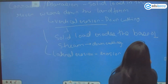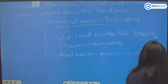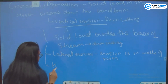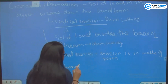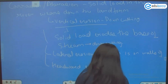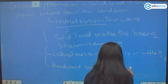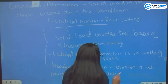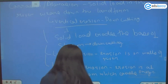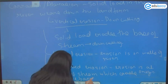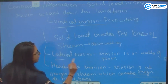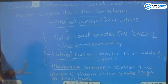Then we have headward erosion. In headward erosion, the erosion is at the origin of the stream, which causes the origin to move back. So there are three types: lateral erosion, vertical erosion, and headward erosion.